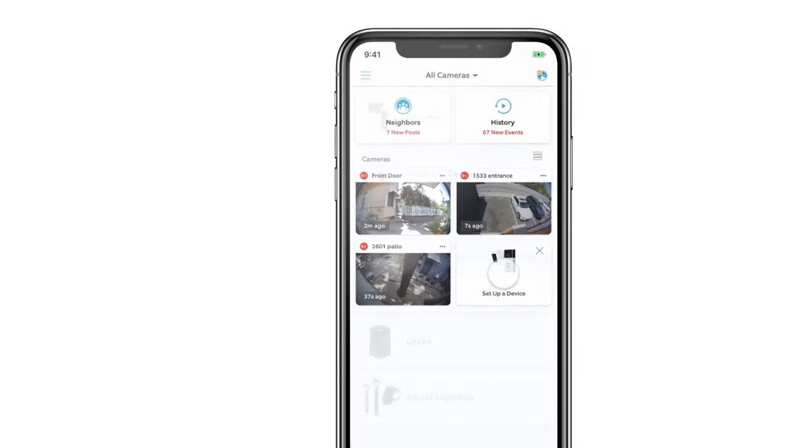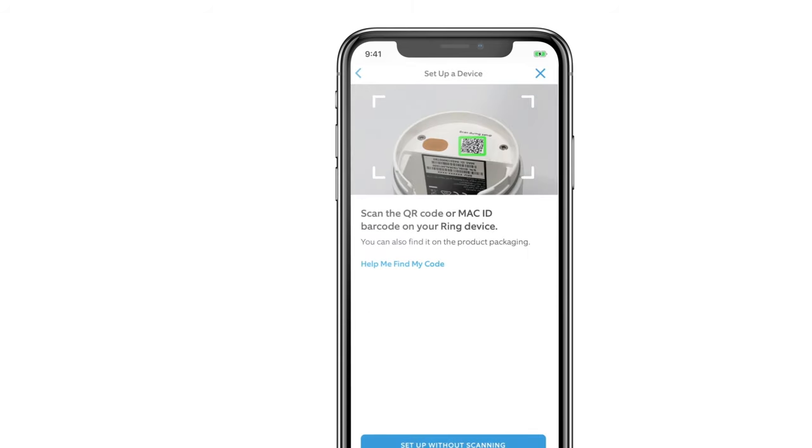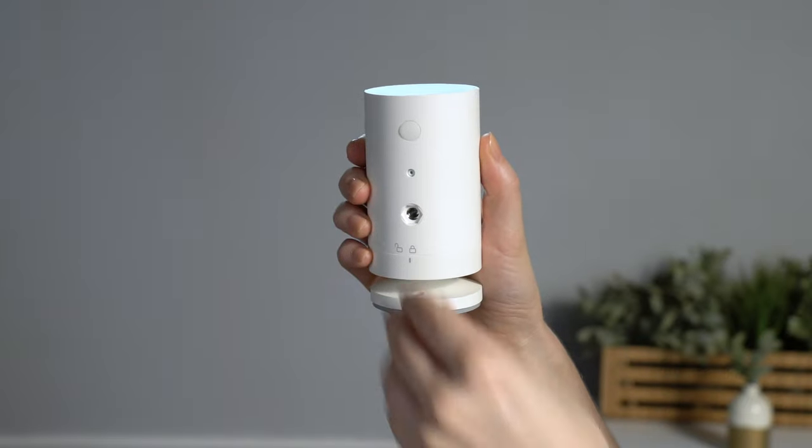Select Set Up a Device, tap Security Cams, then scan the barcode located inside the battery compartment. This begins the setup process in the app.